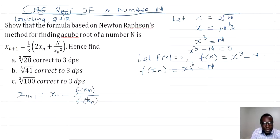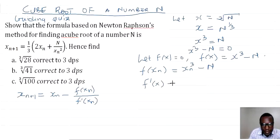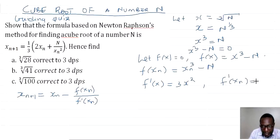Now we need to find f'(xn). Note that we differentiate a continuous function, as the original is a continuous function. So f'(x) = 3x², and therefore f'(xn) = 3xn².